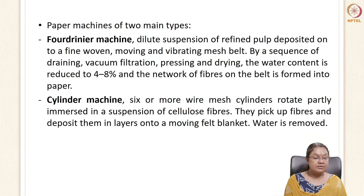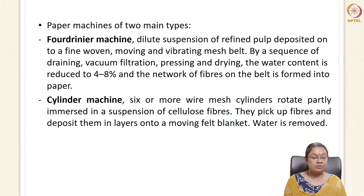There are two types of paper machines: the Fourdrinier machine and the cylinder machine. In the Fourdrinier machine, diluted suspension of refined pulp is deposited on a fine, moving, vibrating mesh belt. Through a sequence of draining, vacuum filtration, and pressing, water is reduced to 4 to 8 percent, and then the sheet is dried. In the cylinder machine, six or more wire mesh cylinders rotate partly immersed in cellulose fiber suspension, picking up and depositing fibers as layers on a moving belt.